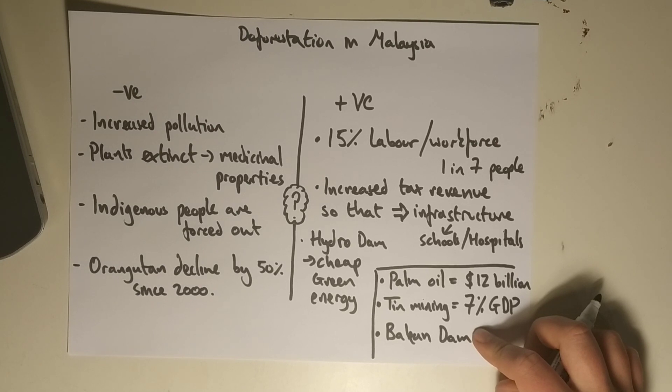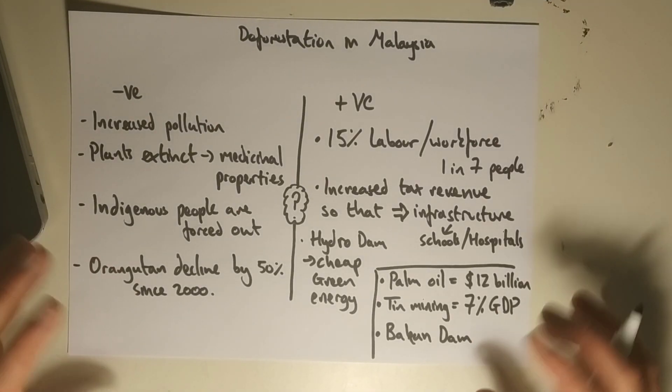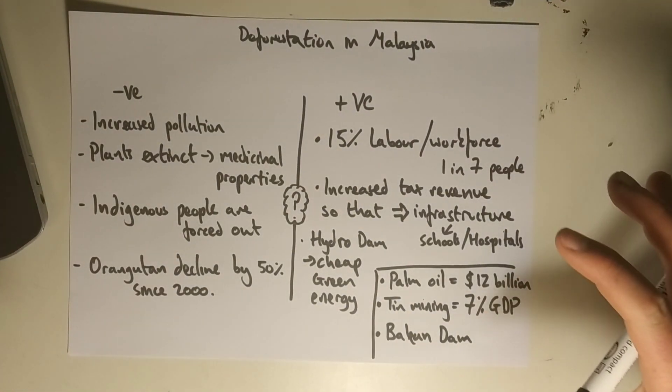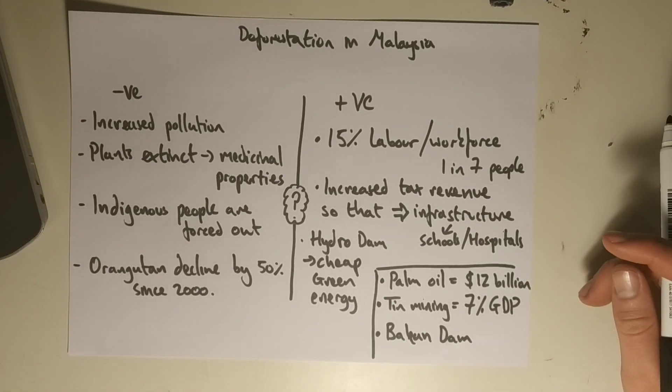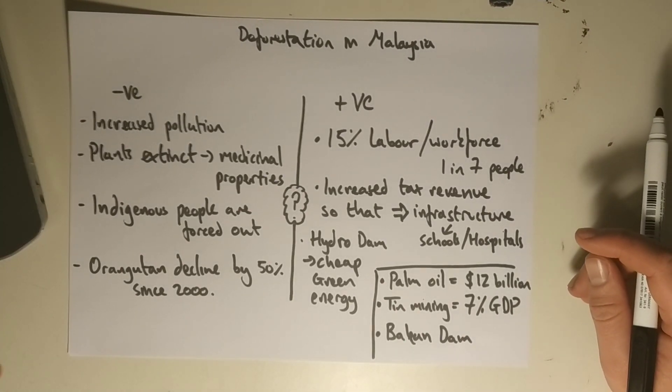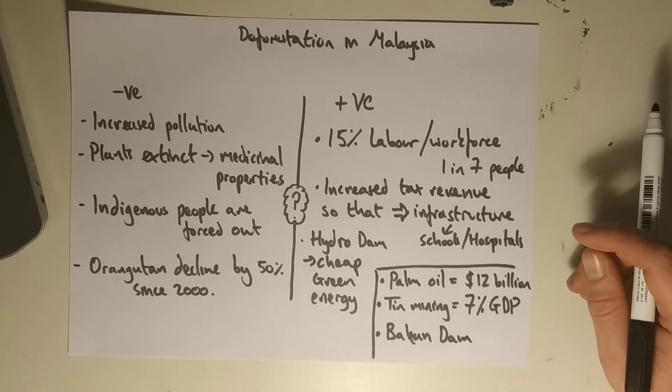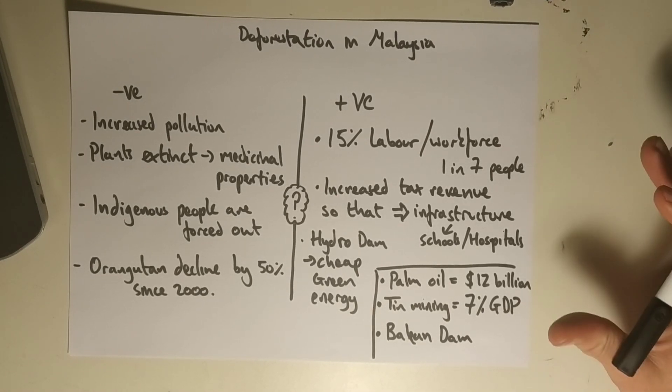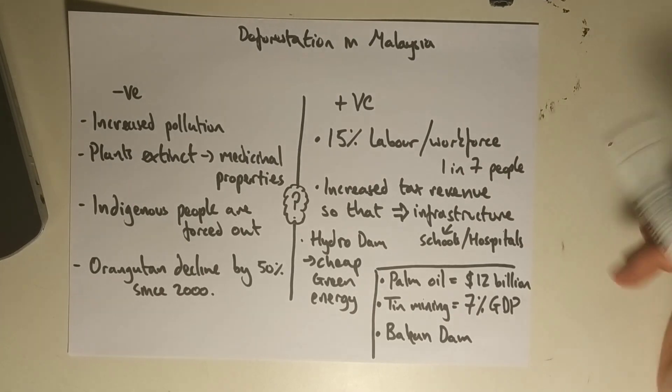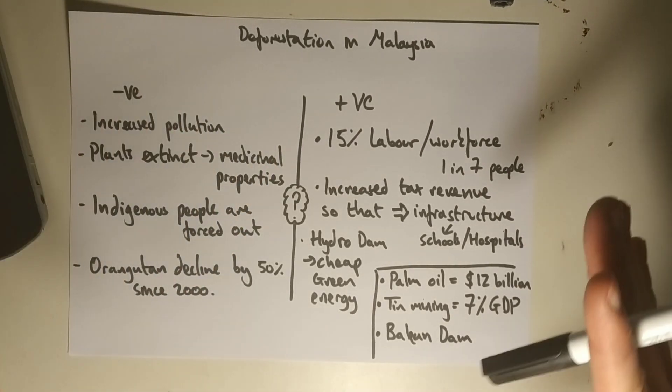So as geographers, we need to weigh up the positives versus the negatives. A classic question is something like using figure one, so they might show a deforested rainforest, and your own knowledge, so deforestation Malaysia, to what extent does deforestation provide economic opportunities at the expense of the environment? That came up in last year's paper and it's something you need to think about in paper three this year.